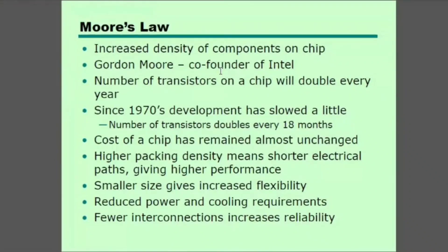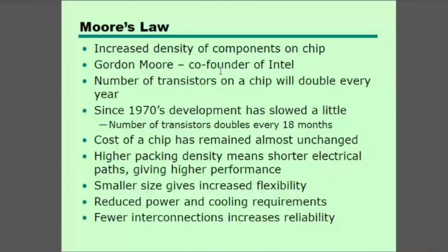The processing power, memory capacity, and cost all improve together. As we have seen with 512 MB RAM, the cost is less, so the overall cost continues to decrease over time.